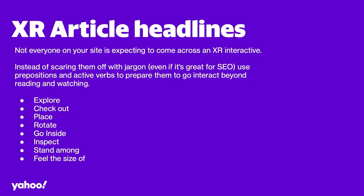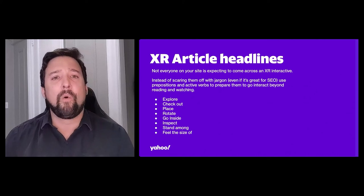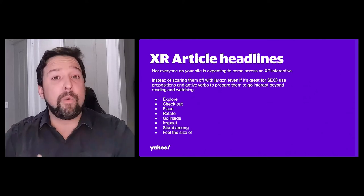Let's talk about XR article headlines. Not everyone on your site is expecting to see an interactive — they might just be there to read something. But you can nudge and prime them to get ready to do something more interactive based on the words you use. Instead of starting out with jargon like 'XR,' you can use really common terms, prepositions, and active verbs to prepare them to go beyond just reading and watching a video. Words like explore, check out, place, rotate, go inside — there are a lot of options to get them thinking about what they're about to do.